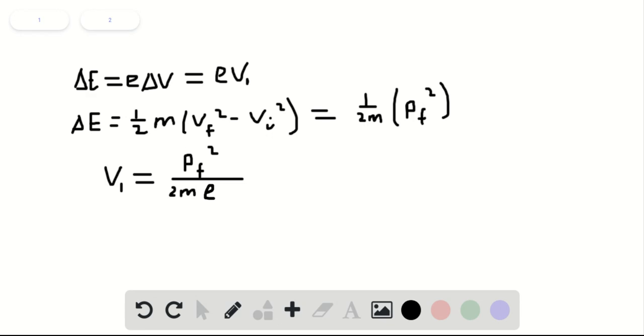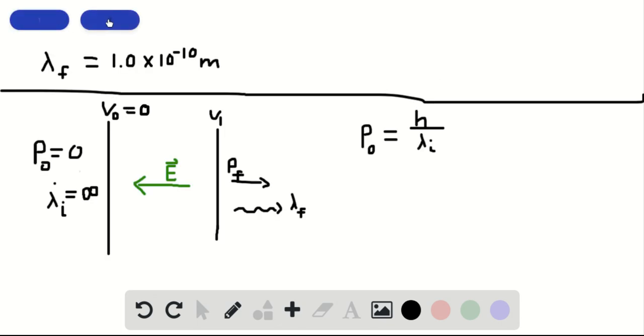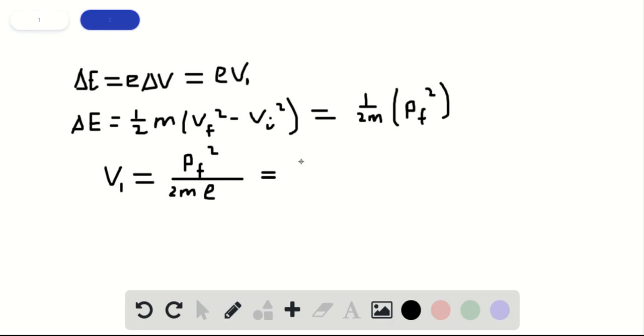Now we substitute for P_f using de Broglie's relation: h/λ_f. This gives us V1 = h²/(2mE·λ_f²), where we were given λ_f at the start of the question.